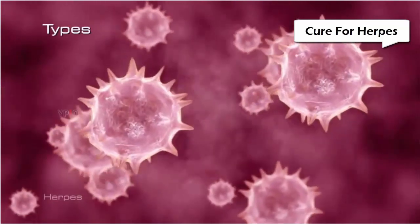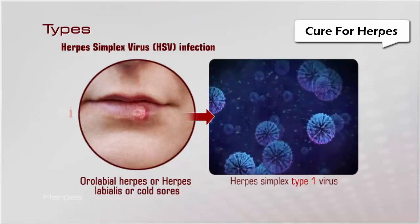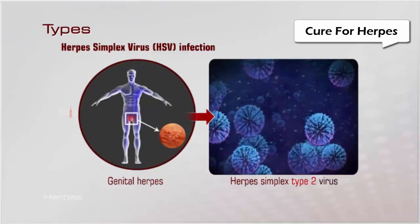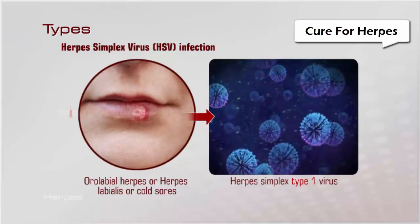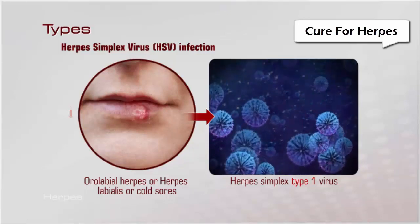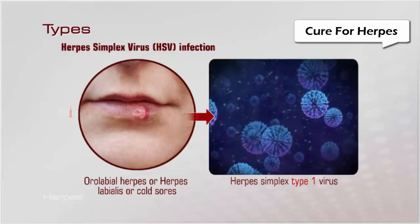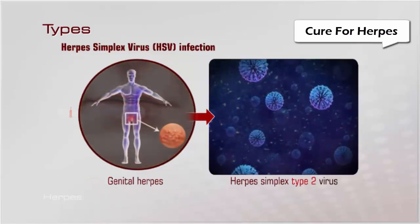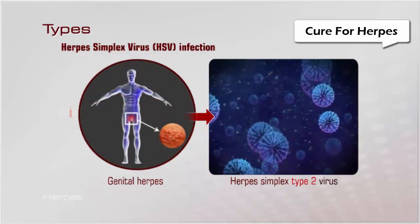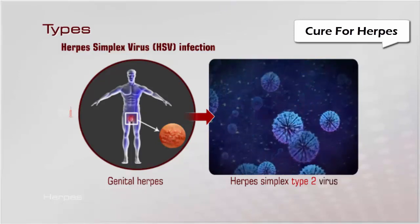There are two types of herpes infections. Herpes simplex virus infection is caused by either herpes simplex type 1 or type 2 virus. Herpes simplex type 1 causes oral labial herpes, or herpes labialis, or cold sores. It is very common and appears on the lips and around the mouth, spreading through contact with saliva carrying the virus or from using contaminated utensils. Herpes simplex type 2 causes genital herpes, which appears on the genital, anal, and buttocks areas, and is sexually transmitted.